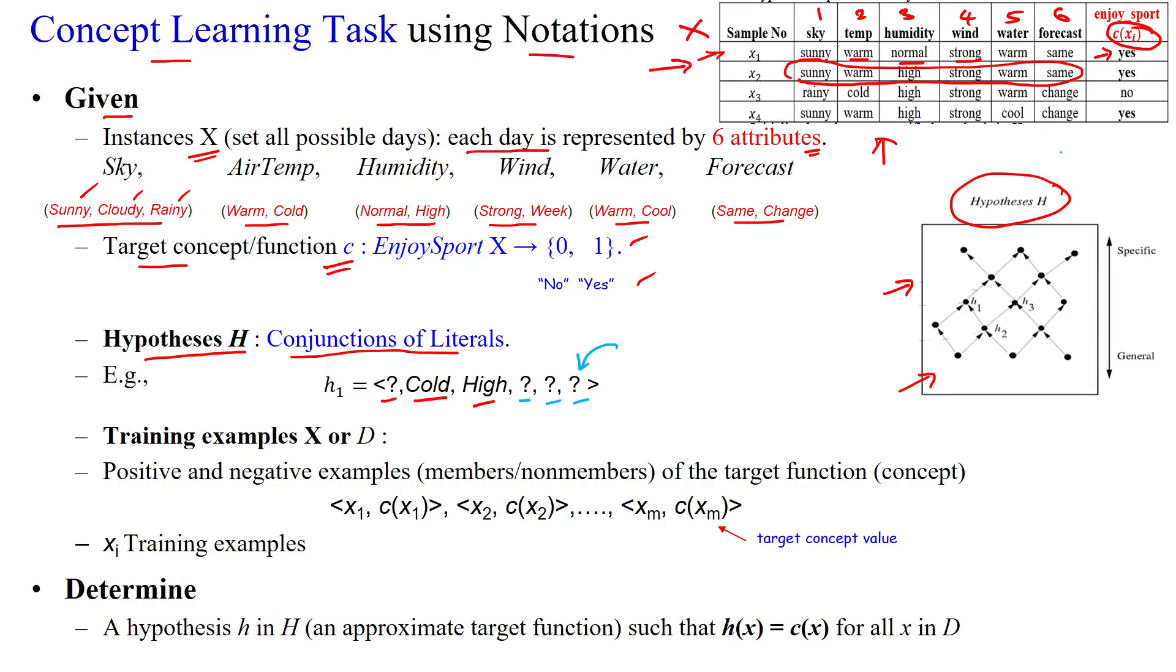Then this training example are represented with instance space capital X or data set D. The examples are denoted with positive example or negative example. That means if it is yes, that is the positive example. If it is no, that will be denoted with negative example. Yes can be represented in another form true or another form one. Like that no can be represented as false or another form zero. So each and every sample can be represented like this.